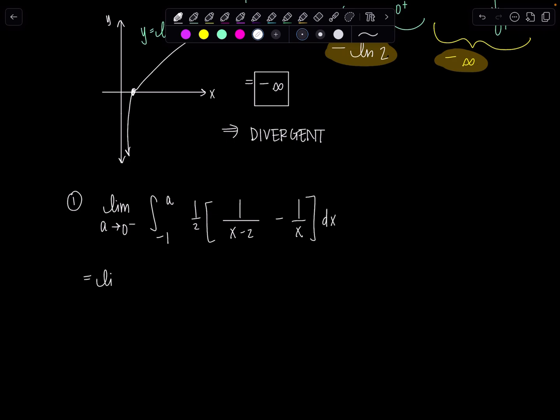So limit a approaches zero from the left, one half. This will be ln absolute value x minus two minus ln absolute value x from negative one to a.